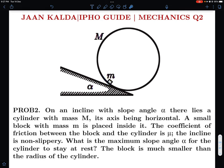Please remember it's not with the incline. It is between the block and the cylinder that is given as mu. The incline is non-slippery, so you do not have to worry about slipping happening on the incline. What is the maximum slope angle alpha for the cylinder to stay at rest? So we have to find out the maximum possible angle of alpha so that cylinder does not start rolling. The block is much smaller than the radius of the cylinder.